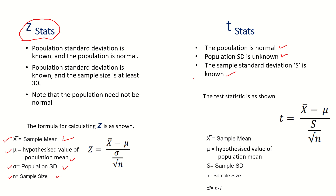Here, X-bar is the sample mean, mu is the hypothesis value of the population mean, S is the sample standard deviation, and n is the sample size. We also need the degree of freedom, which equals n minus 1. For example, if the sample size is 40, the degree of freedom is 39. This degree of freedom is required to find the critical value by referring to the T table.